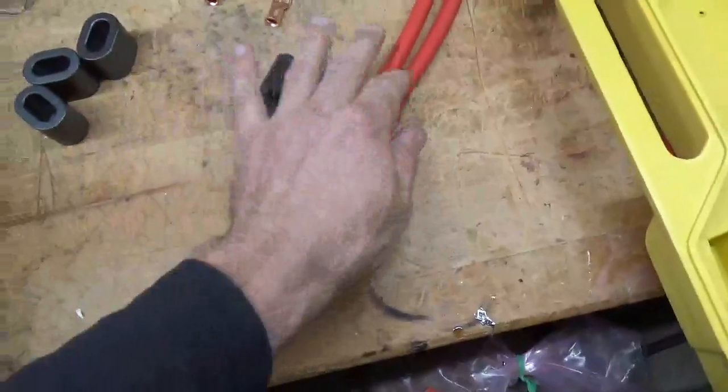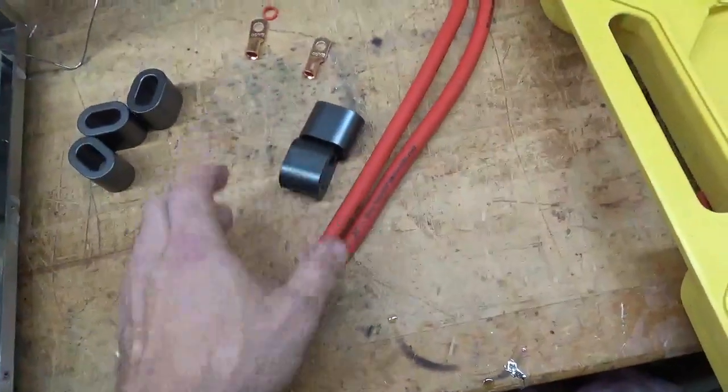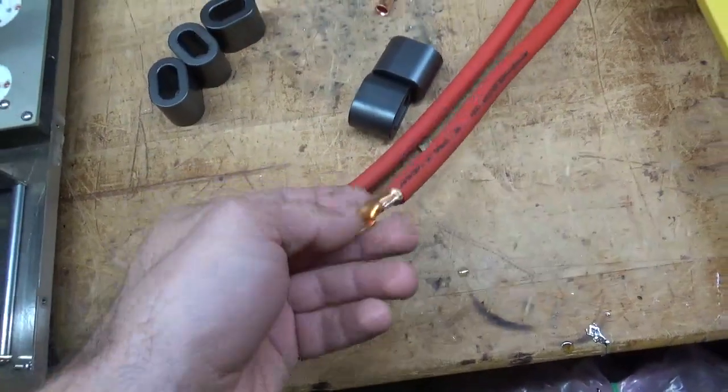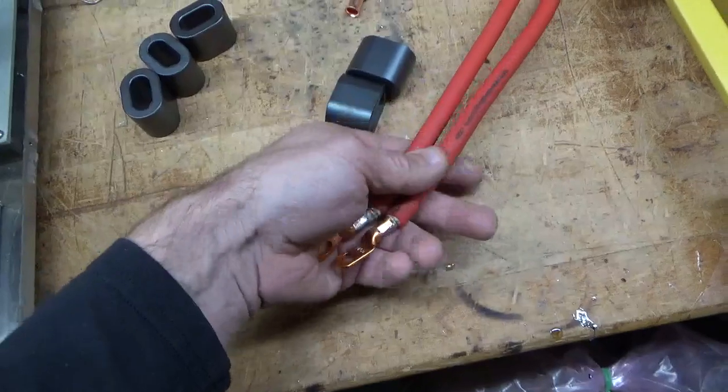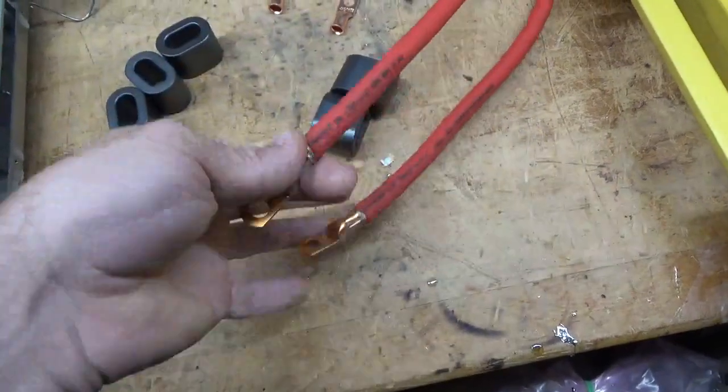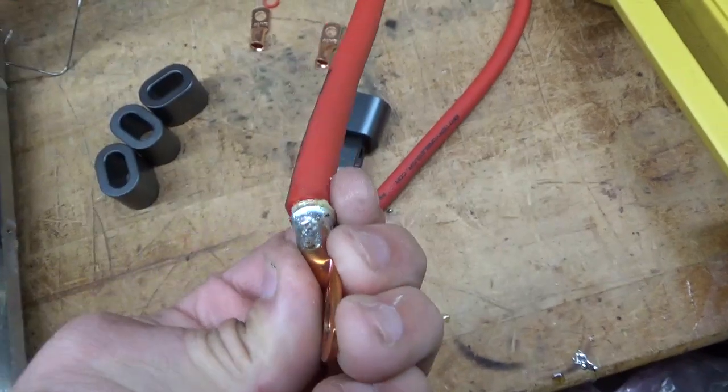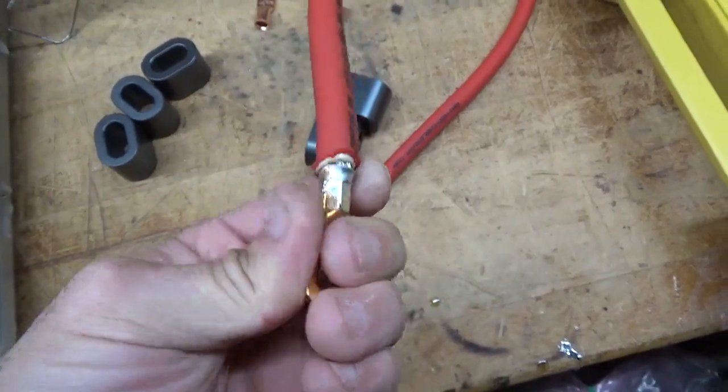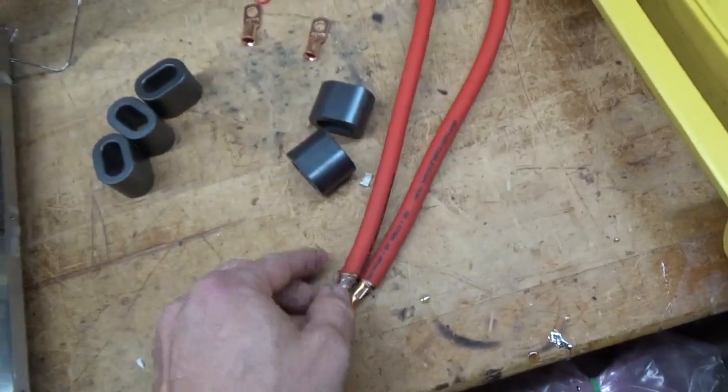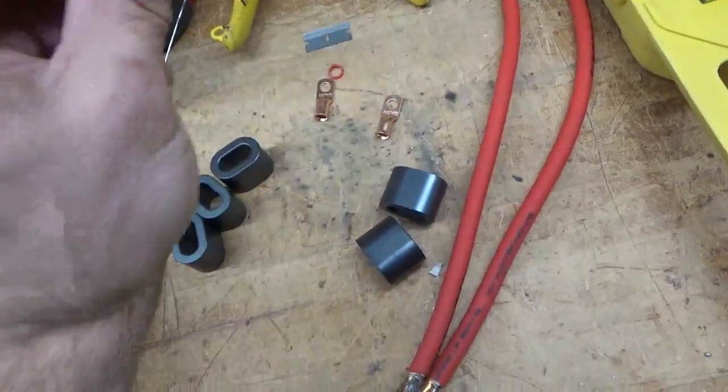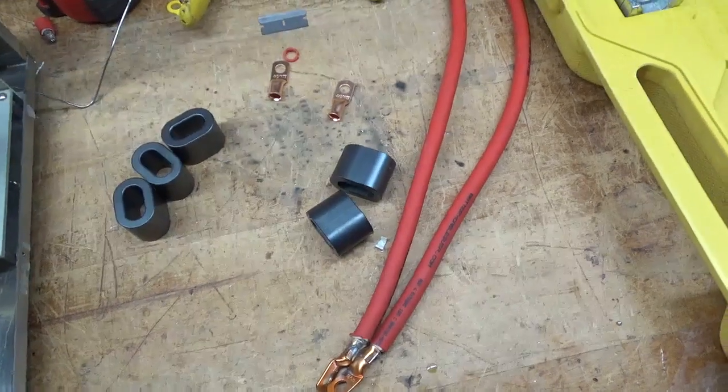Once again, I will be heat shrinking it. I don't just crimp. I always like to crimp and solder. The insulation didn't come back, didn't flood, didn't melt backwards. Good stuff. Double insulated wire, high strand. I'll be back, see you soon.